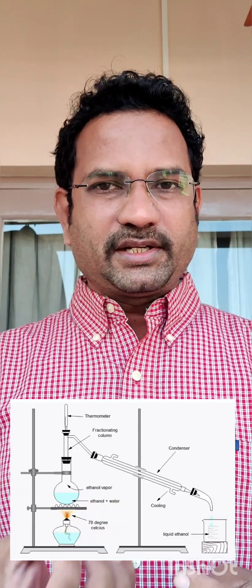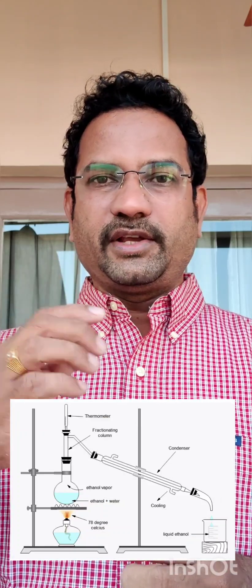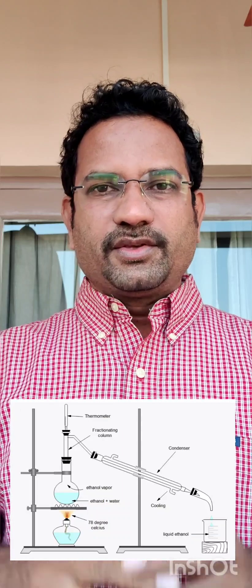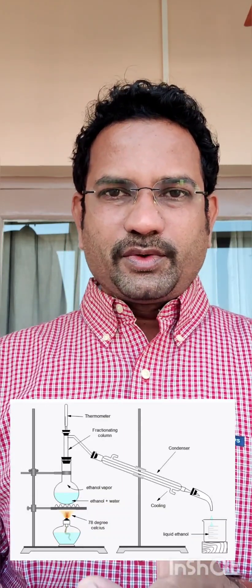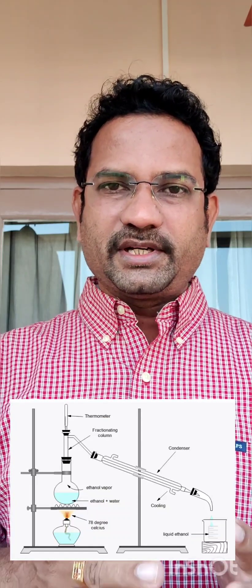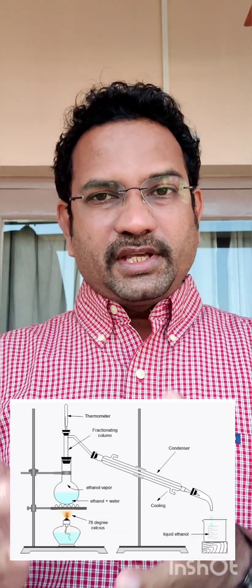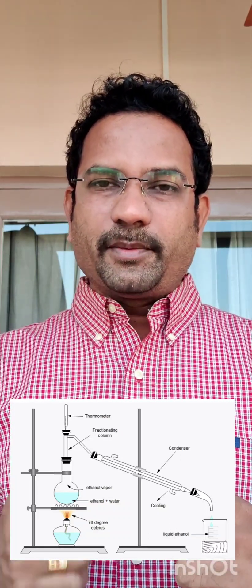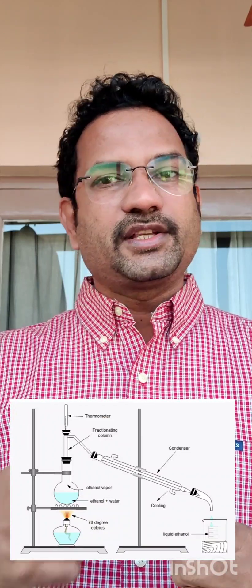After 95%, when you heat at 78°C, water also comes out in the evaporate because it forms a special mixture known as an azeotropic mixture. So after 95%, water co-distills, and whatever distillate you get contains only 95% alcohol, with the remaining 5% being water. This mixture is known as rectified spirit, because it is prepared by a process called rectification — repeated distillation is called rectification — hence it is called rectified spirit.